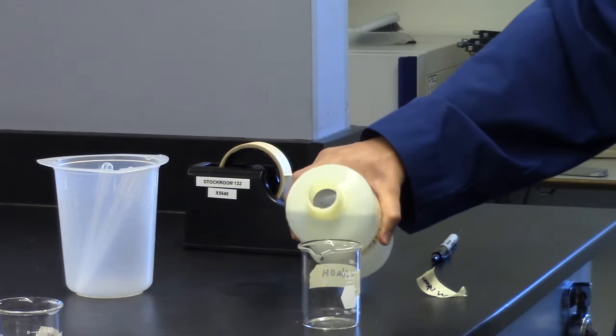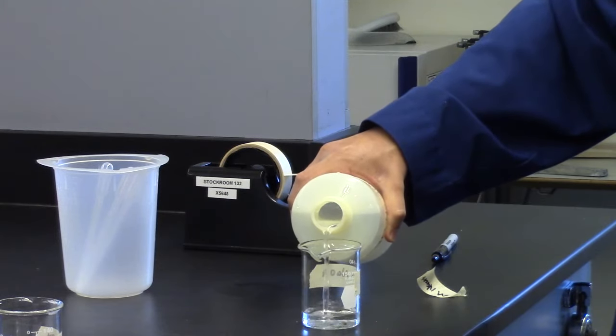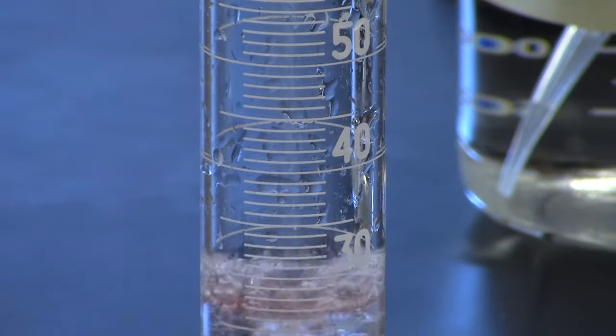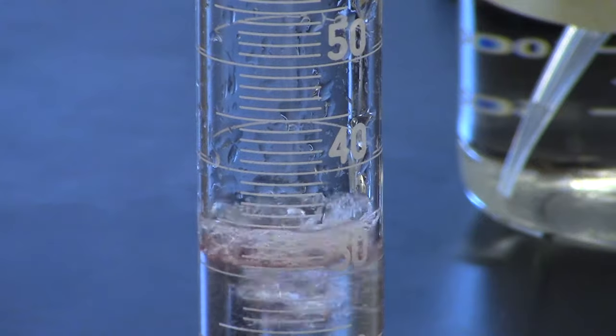Obtain 3.0 molar sodium hydroxide. Pour it into a beaker. Using a 100 ml graduated cylinder, measure out approximately 33 ml of sodium hydroxide.